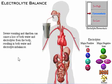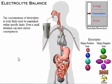Severe vomiting and diarrhea can cause a loss of both water and electrolytes from the body, resulting in both water and electrolyte imbalances. The concentrations of electrolytes in body fluids must be maintained within specific limits, and even a small deviation outside these limits can have serious or life-threatening consequences.